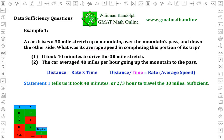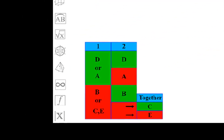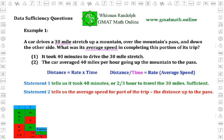Now the natural tendency at this point is to think we're done. But we're not — we still need to examine statement two. If statement two is not sufficient, then the answer to the DS question is A. But if statement two is sufficient, then the answer is D. Statement two tells us the average speed for part of the trip — the distance up to the pass. But in order to calculate the required average, we need the average for the entire trip, not just one part of it. So statement two by itself is not sufficient. Remember, in evaluating statement two, it's always essential to put the information from statement one completely out of our minds. Each statement must be evaluated independently.